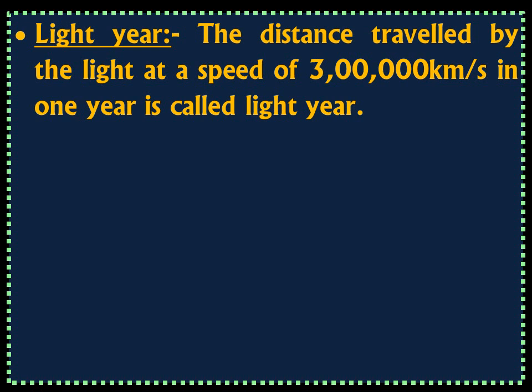So, light year means it is the distance traveled by light in one year. The speed of light is 3 lakh kilometers per second. Therefore, it is the distance traveled by light in one year at a speed of 3 lakh kilometers per second.